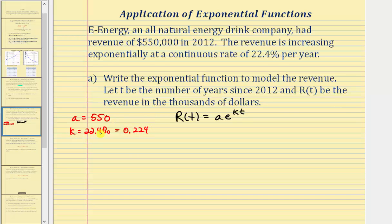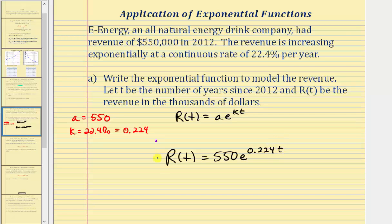This is all the information we need to write our revenue function. We have r of t equals 550 times e raised to the power of 0.224t. Now we'll use this function to answer the next two questions.